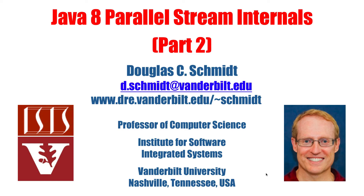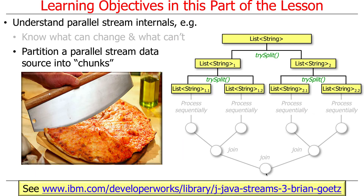Now that we've talked a little bit about what you can change and what you can't change as far as the semantics of parallel streams, let's keep diving deeper into the various steps involved. What we'll start off with is the first key step, which is partitioning a parallel stream's data source into chunks.